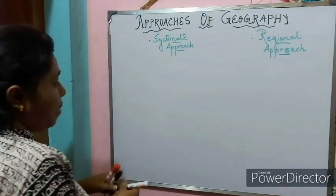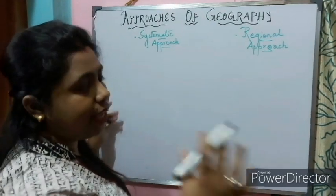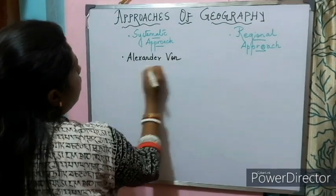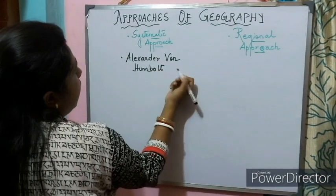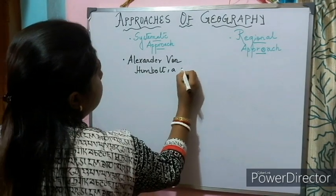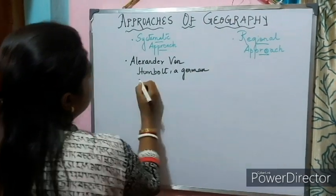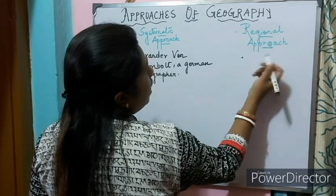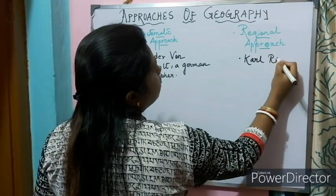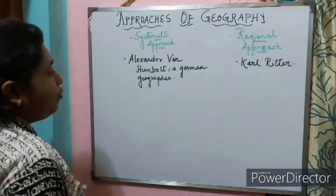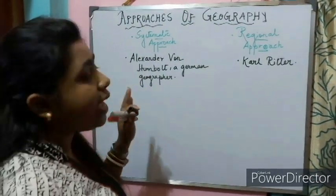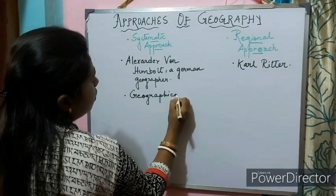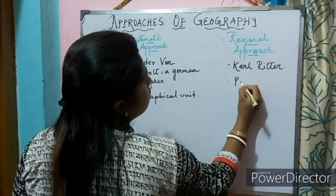What is the systematic approach? This approach was first given by Alexander von Humboldt, a German geographer. The regional approach was given by Karl Ritter, who was also a German geographer. Systematic approach is based on geographical units, whereas regional approach is based on political units.